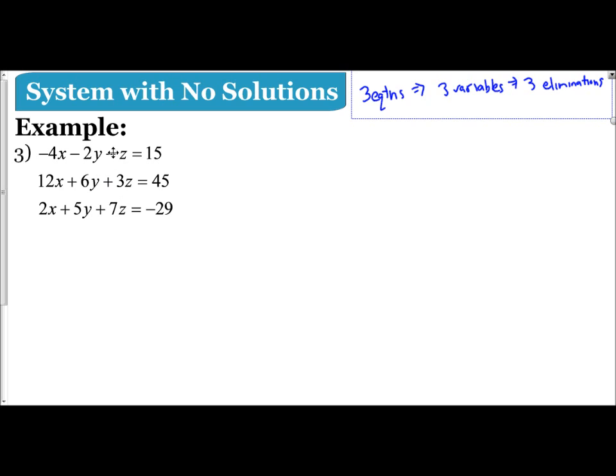But the one that stands out to me is the z variable. The reason why is because I have a -1 here. So that means I can pair this one up with the 3 by multiplying the top one by 3, and I can pair this one up with the 7 by multiplying the top one by 7. So to me, this is a little bit easier.